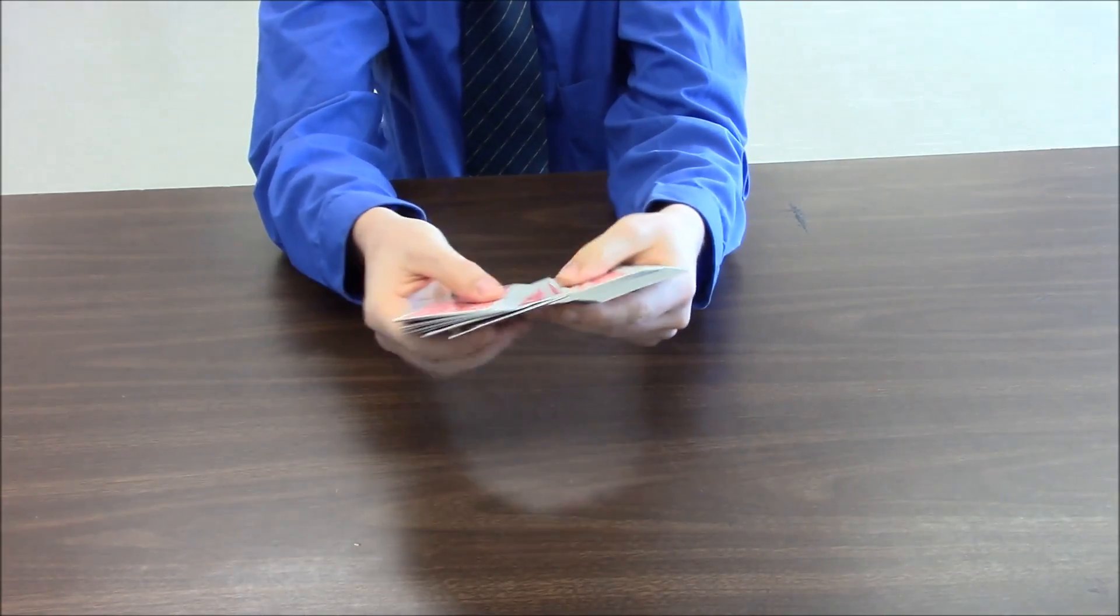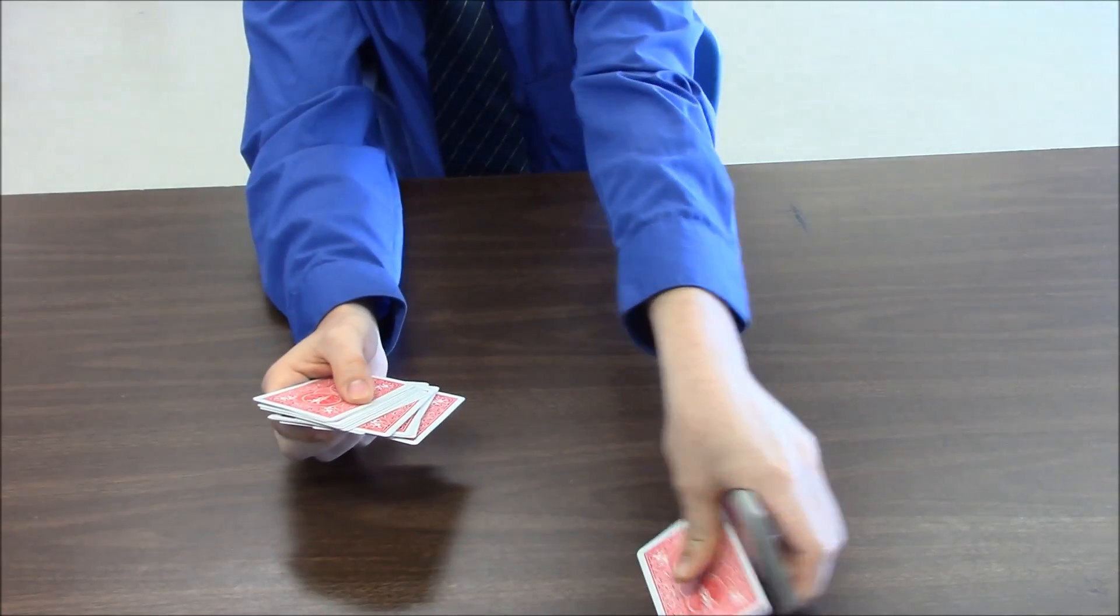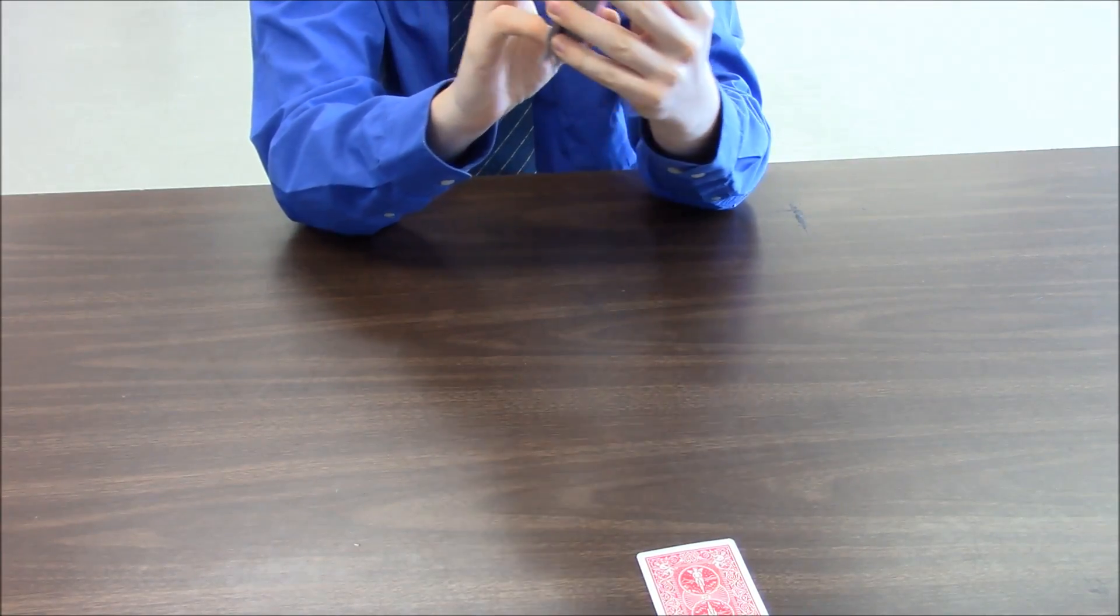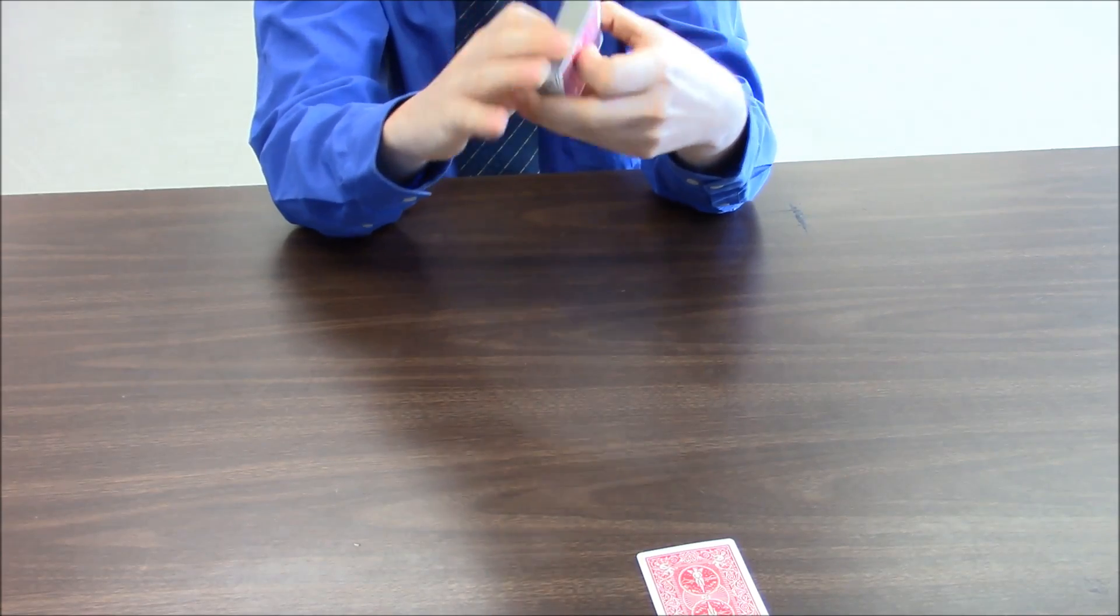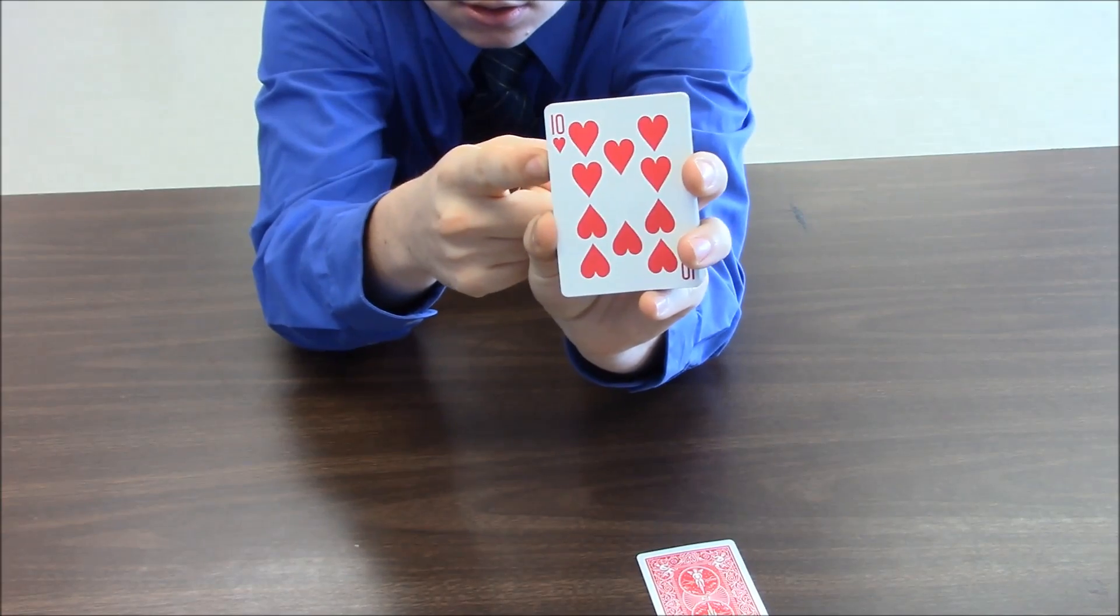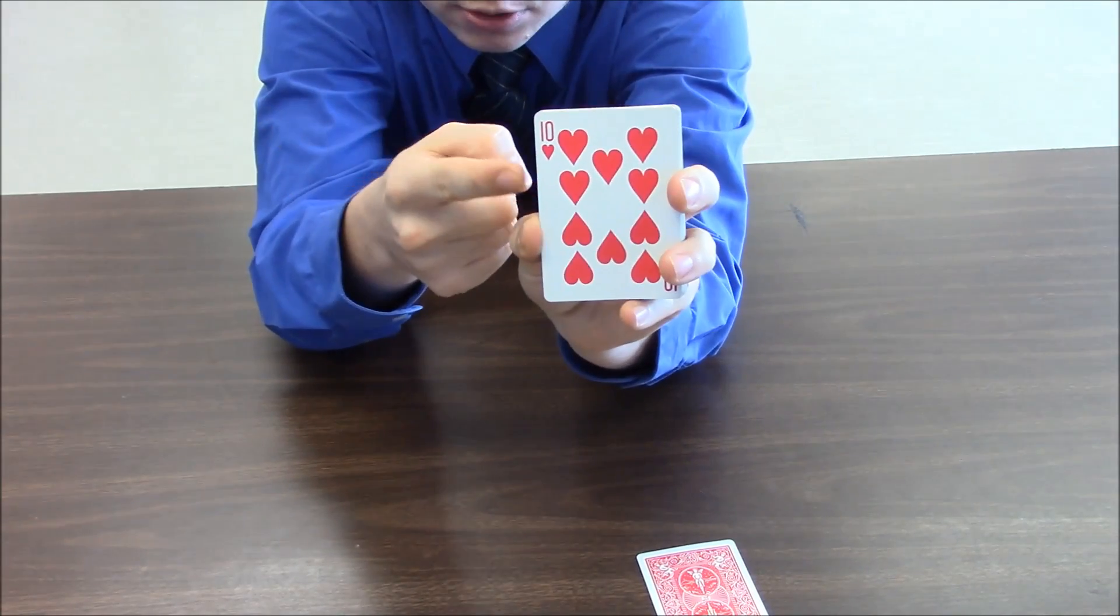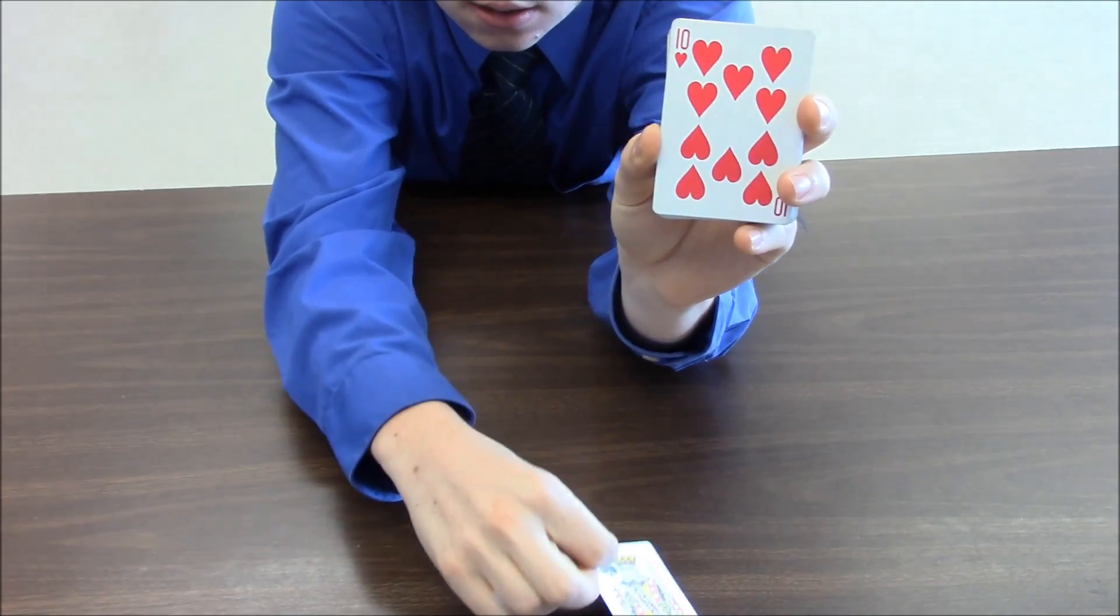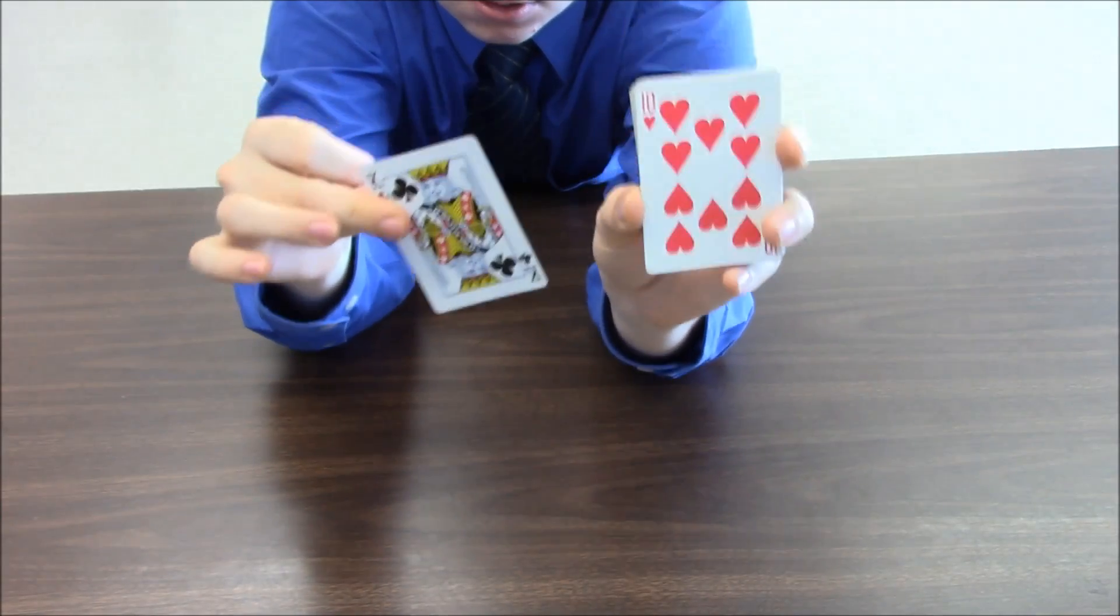So any card is chosen. Now without looking at the card, I take a look at the bottom card. So in this case, the bottom card is the ten of hearts. So ten plus three gives you thirteen, which is the king. And it should be the king of clubs, which it is.